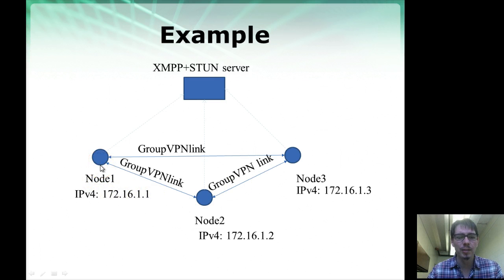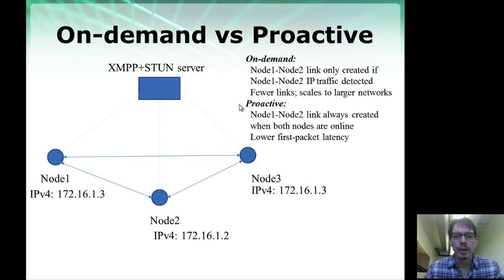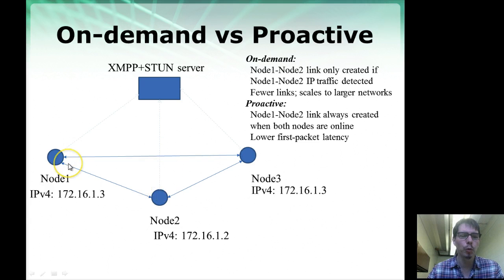Just like before, when this node sends a message to IP address .1.2, for example, TinCan will look up what link brings that message to this destination and will forward it along this tunnel. And if this node sends an IP packet to .1.3, TinCan will look it up and send it to this VPN link. There are two ways that these links can be created. One is called proactive — so the links between node 1 and node 2, or node 1 and node 3, are going to be created when both nodes are online. If node 1 joins the network and sends a presence message received by nodes 2 and 3, that automatically creates links between them.